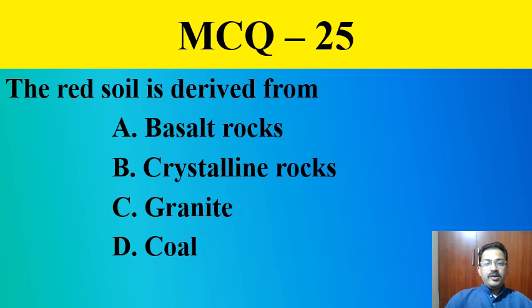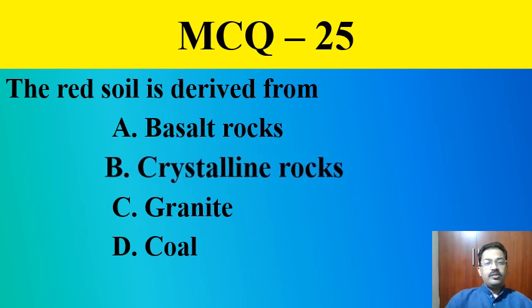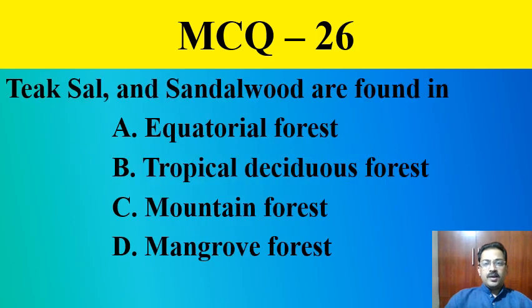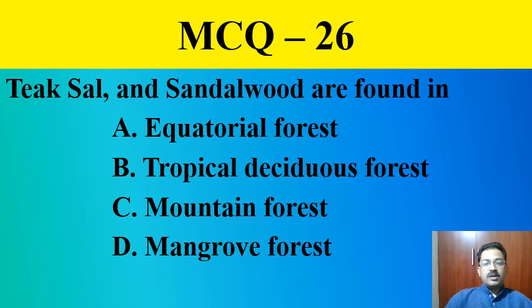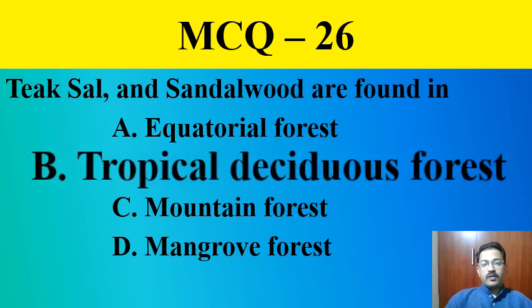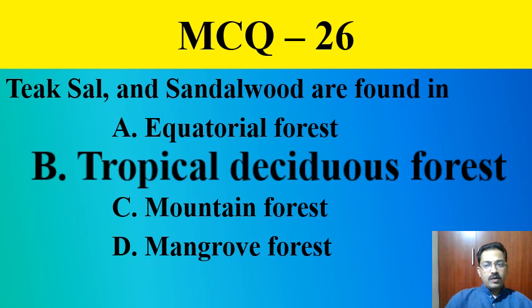MCQ question number twenty-five: Red soil is derived from — basalt rocks, crystalline rocks, granite, or coal. The correct answer is crystalline rocks. MCQ question number twenty-six: The correct answer is tropical deciduous forest, which is also called monsoon forest.